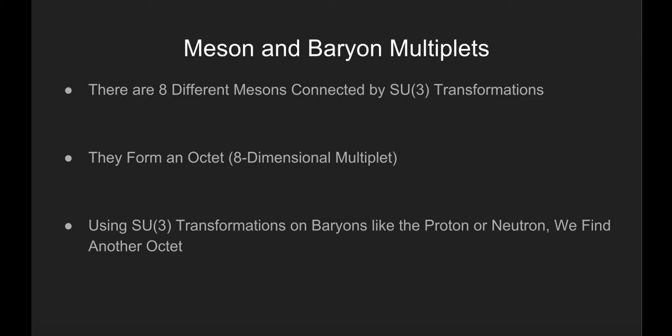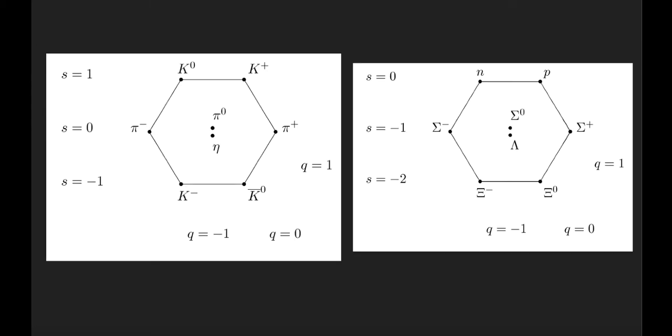If we apply this procedure to baryons, like the proton or neutron, we also get an octet. Here is a representation of the meson octet and the baryon octet where each Greek letter represents a particle.